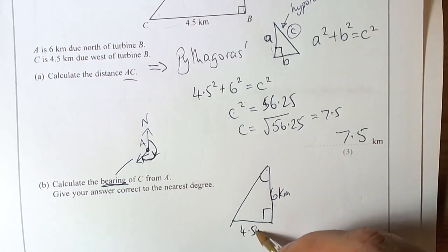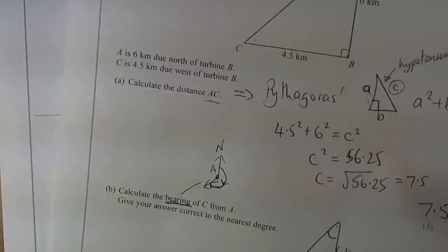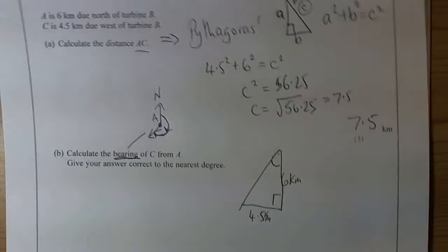So trigonometry. A right-angle triangle, two lengths given, find a missing angle - then we can use trigonometry to work it out.